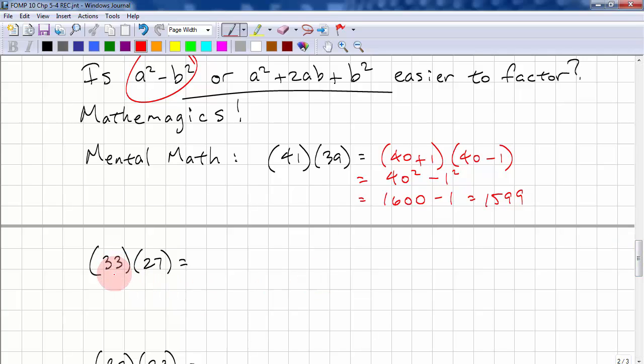Here, we have 33 times 27. This is (30 + 3) times (30 - 3). Using the difference of squares, we get 30² minus 3². This is 900 minus 9. This gives us 891. Hopefully, you see the pattern here. So if the average of the two numbers is a multiple of 10, then we can use the difference of squares. It doesn't do us any good if the average doesn't end in a 0.